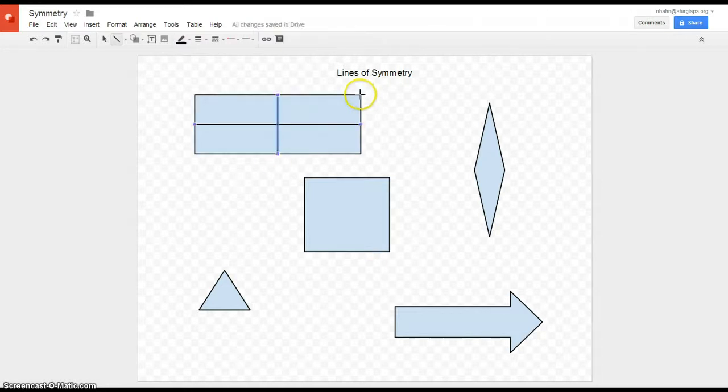Sometimes we might think that it has four lines of symmetry, because this line, and also if I was to draw one like this, these two parts right here, let me get rid of this. These two parts look the same.